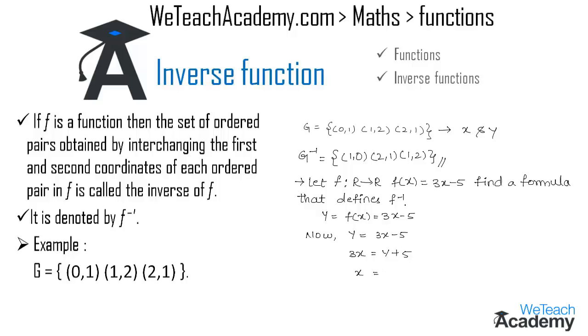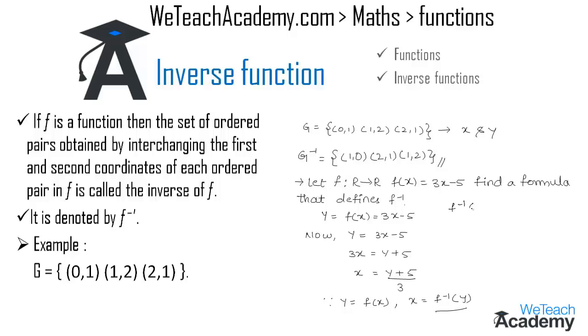By transferring 3 to the other side we get x equals y plus 5 divided by 3. Here, since y equals f of x, then x equals f inverse of y. So we can conclude that f inverse of y equals y plus 5 divided by 3.